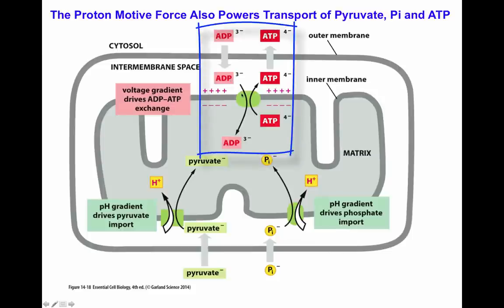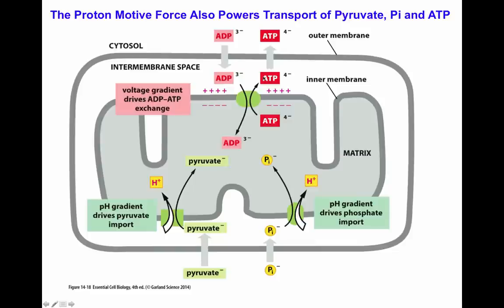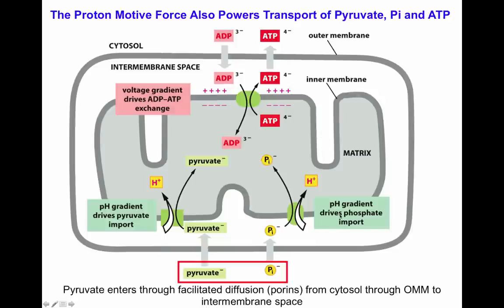Phosphate coming inside can also be transported across the membrane utilizing the pH gradient through a phosphate importer that allows the import of protons into the membrane. To import ADP, a voltage gradient can drive ATP and ADP exchange — the voltage gradient allows the movement of ATP to the outside with concomitant transport of ADP inside the matrix. Pyruvate enters through facilitated diffusion from porins present in the outer membrane of the mitochondria.